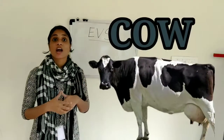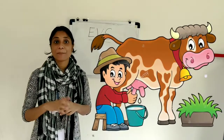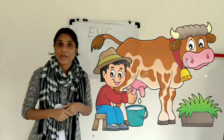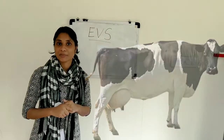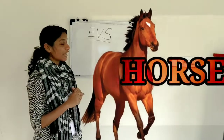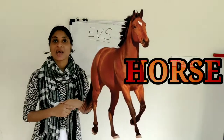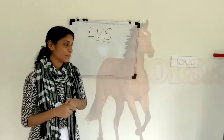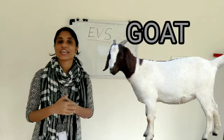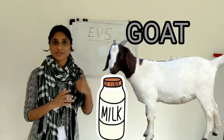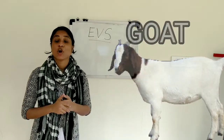Next is cow. Cow gives us milk. Cow is a domestic animal. Horse is also a domestic animal. And this is goat. Goat also gives us milk. Goat is a domestic animal.